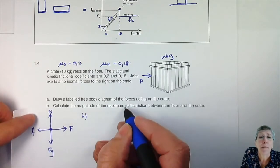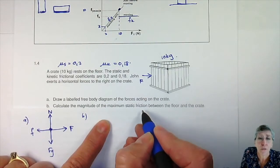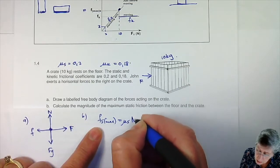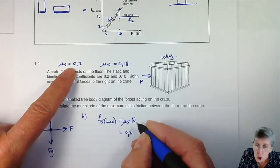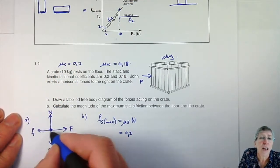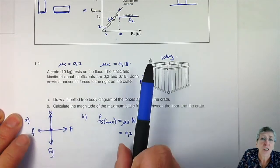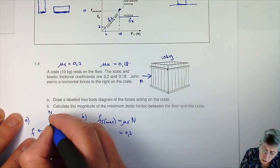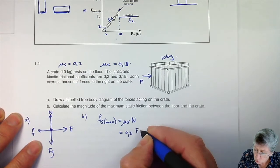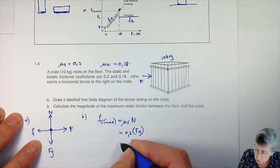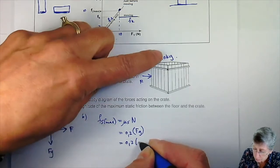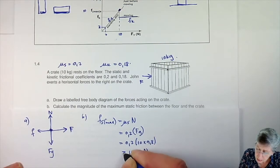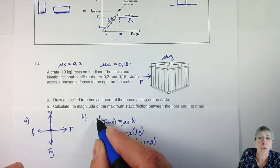Next, calculate the magnitude of the maximum static friction. We want Fs max, and for that we have the equation mu s times N. Mu s is 0.2, and for the normal force, since I only have horizontal forces with no vertical movement, the net force in the vertical direction is zero - so the normal force is equal to gravity. That's going to be 0.2 times 10 times 9.8, and we end up with 19.60 N. That is the maximum amount of force that it can resist.